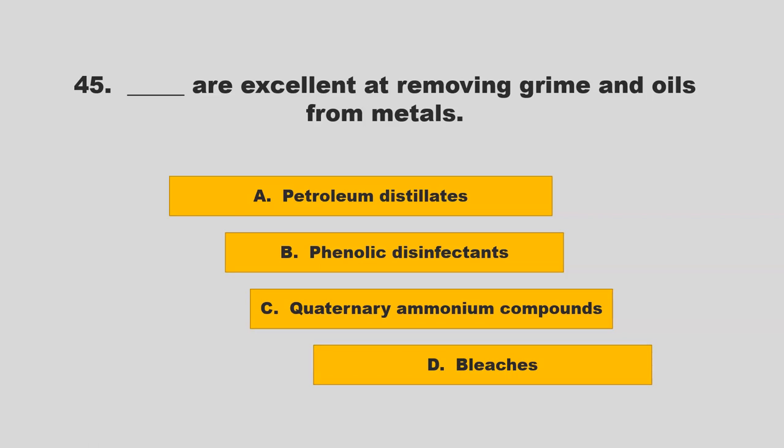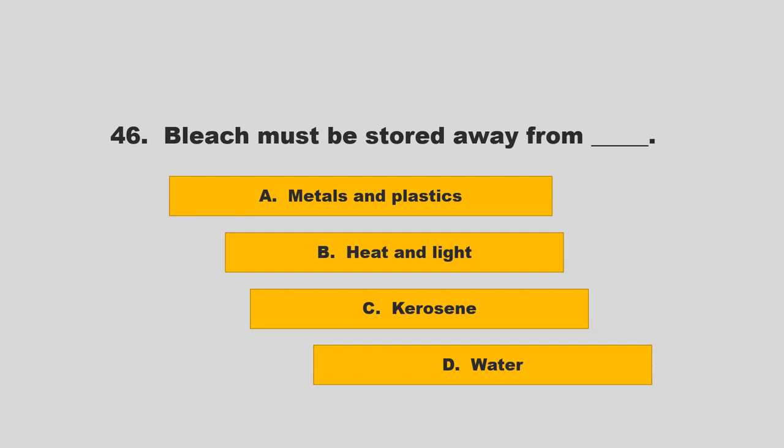Blank are excellent at removing grime and oils from metals. Options: petroleum distillates, phenolic disinfectants, quaternary ammonium compounds, or bleaches. The correct answer is A: petroleum distillates.